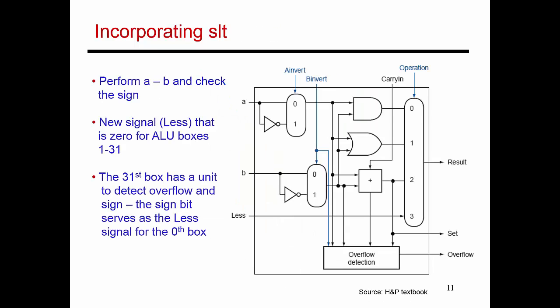The first is the set on less than function. So if you recall the MIPS architecture or the MIPS instruction set, you have an instruction that says set on less than A, B, where A and B are registers, and the result gets placed in a third register.